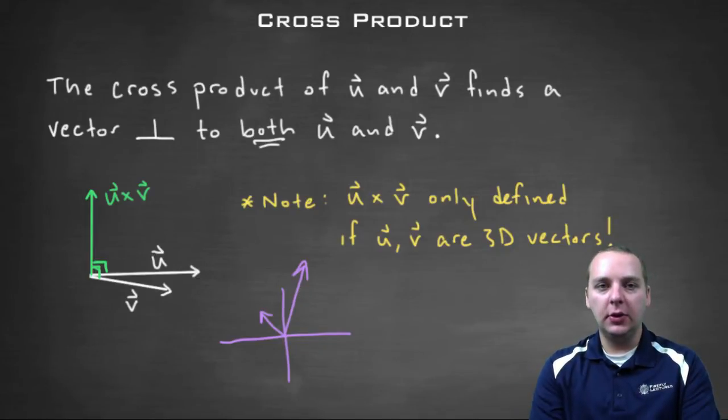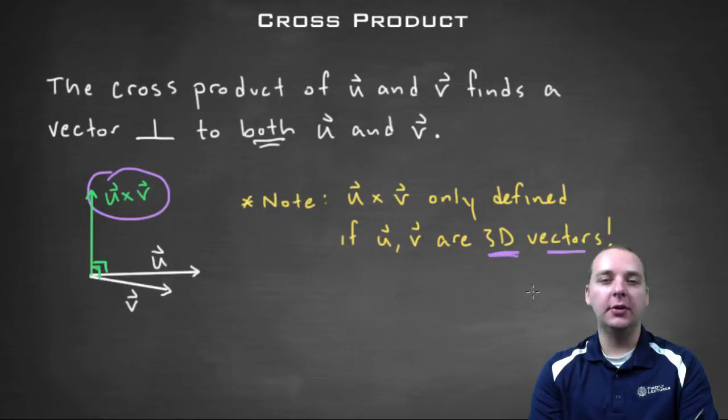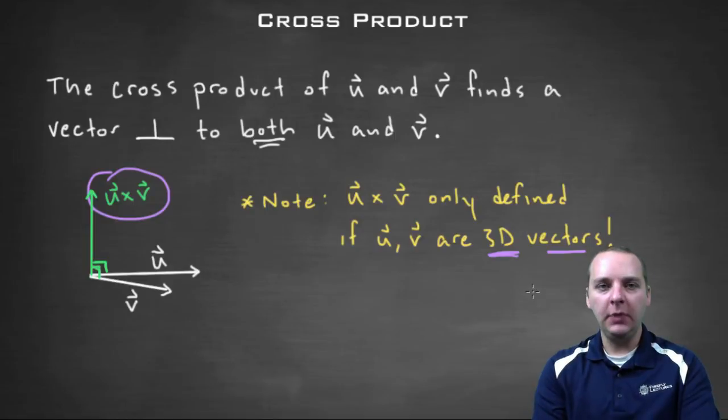So the short of it, the point that I'm trying to get at is that you can only take cross products when your two vectors u and v are three dimensional vectors. It makes no sense to try to take a cross product of two dimensional vectors. They have to be three dimensional vectors.